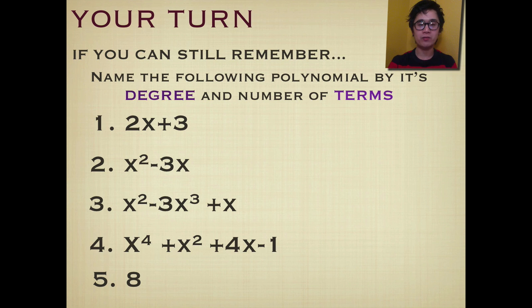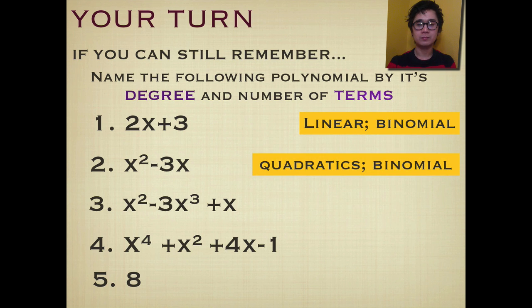Now, if your answer is correct, for the first one, we can call it linear and binomial. And for the second one, quadratic and binomial, cubic and trinomial.